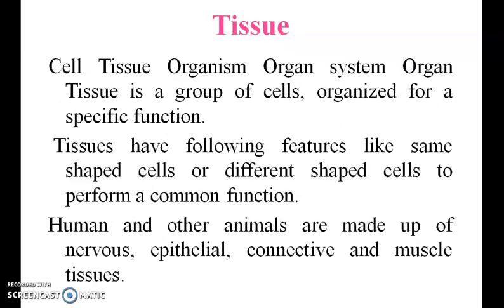Tissues: a tissue is a group of cells organized for a specific function. Tissues can have same-shaped or different-shaped cells to perform a common function. Humans and other animals are made up of nervous, epithelial, connective, and muscular tissues.